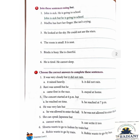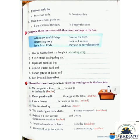Number 7, page number 79: 'Kirthi was early but — A. Sumi was early, or B. Sumi was late.' The answer is: 'Kirthi was early but Sumi was late.'